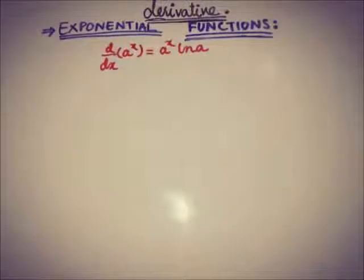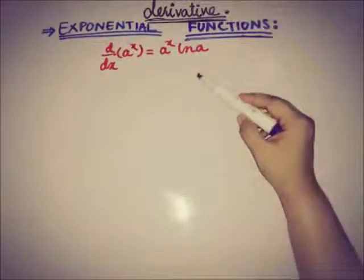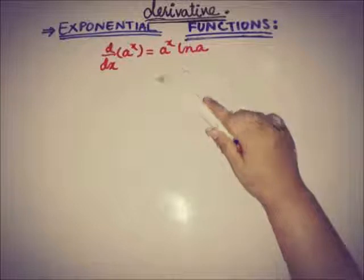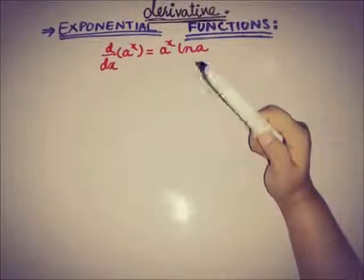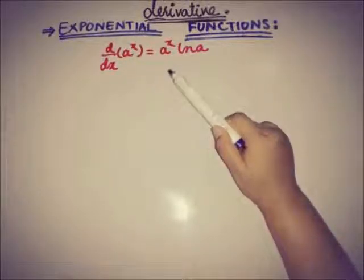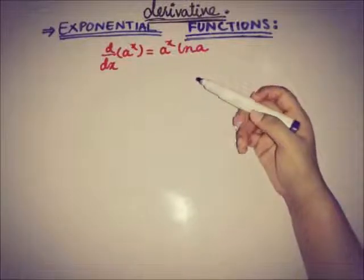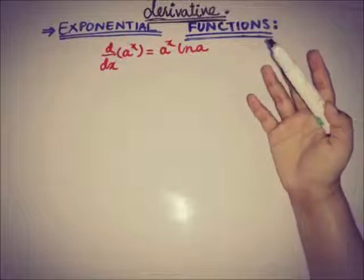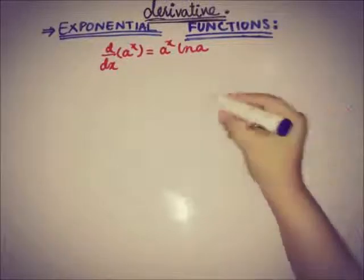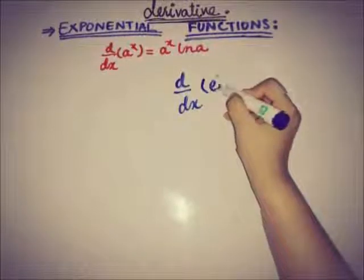In this video we will talk about the rate of change of a special type of exponential function. We are already familiar with the rate of change of the general exponential function — that is, a to the power x — so the rate of change of a to the power x is a to the power x times the natural log of a, as we proved in the previous video.